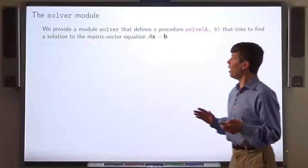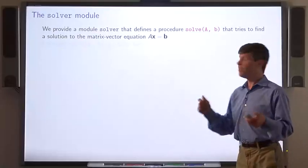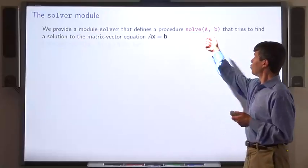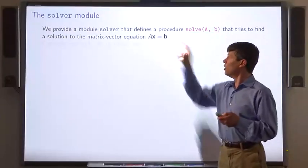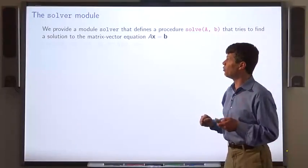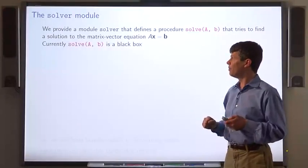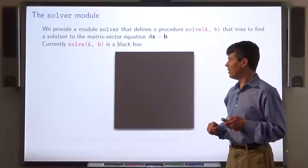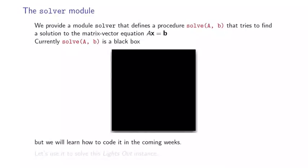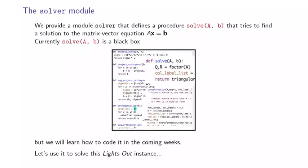We provide a module solver that defines a procedure — solve(a, b) — that tries to find a solution to the matrix-vector equation ax equals b. Currently, solve(a, b) is a black box. Over the course of time, we'll figure out how to code it. Let's see how we can use it to solve lights out, for example.